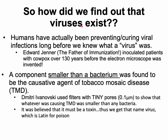How did we find out viruses exist if they're so tiny? Humans were actually preventing or curing viral infections before we even knew what a virus was. Think back to Edward Jenner, the father of immunization — he inoculated patients with cowpox to prevent the more serious smallpox, both caused by viruses. He created this vaccine 130 years before the electron microscope was invented, so he couldn't see the infectious agent.